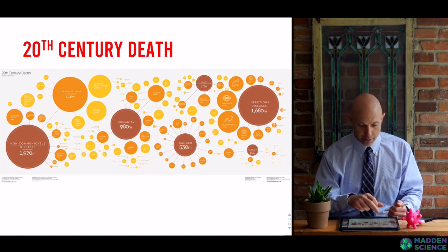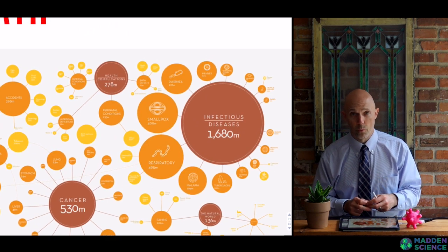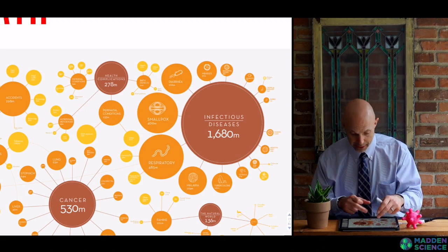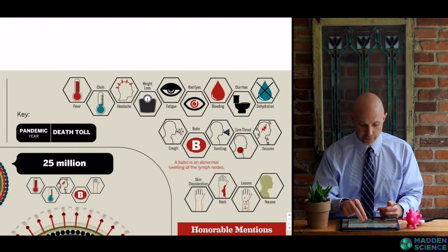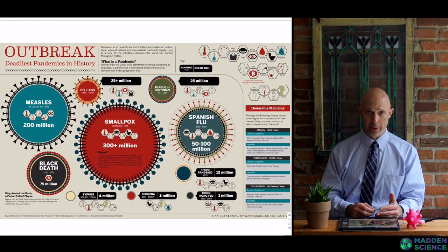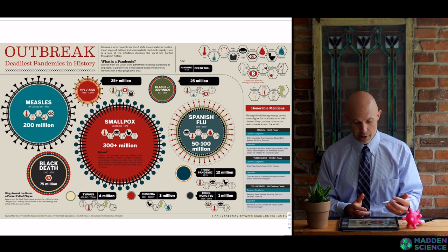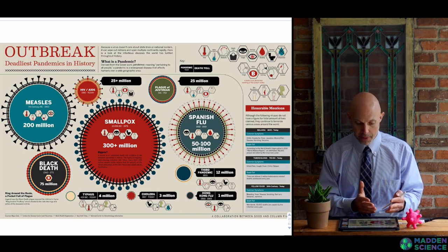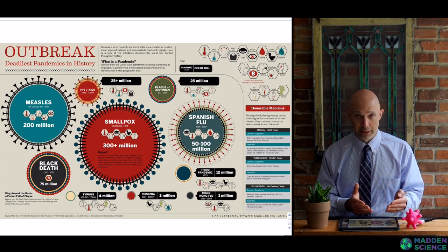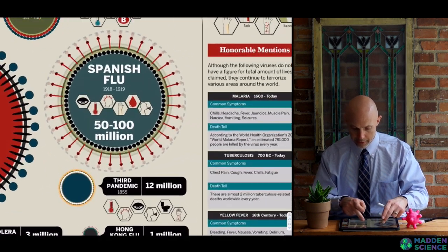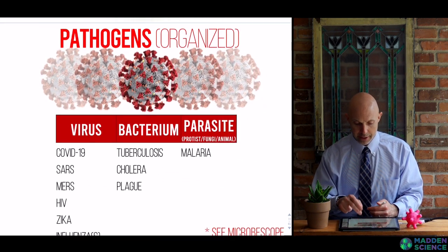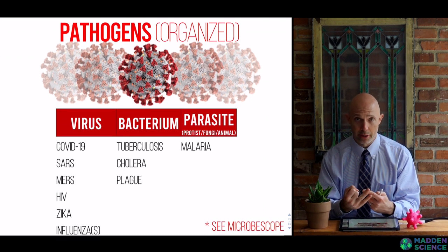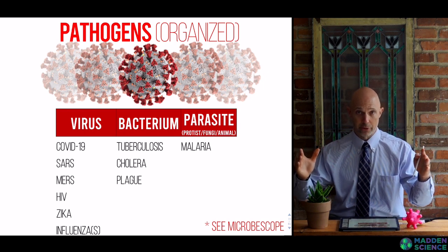In terms of 20th-century death, infectious disease accounts for 1,680 million deaths. You can see smallpox, respiratory diseases, malaria, tuberculosis, and HIV/AIDS all represented. Here's a view of outbreaks and pandemics throughout history — we're currently in one with COVID-19. The Spanish flu about a hundred years ago killed 50 to 100 million. Smallpox throughout time, and the Black Death at 75 million — upward of 50 percent of Europe. Currently: the number one virus killer is HIV, number one bacterial killer is tuberculosis, and number one parasite killer is malaria.